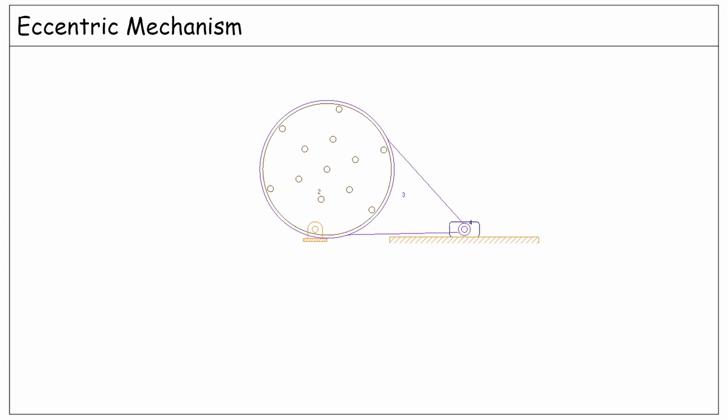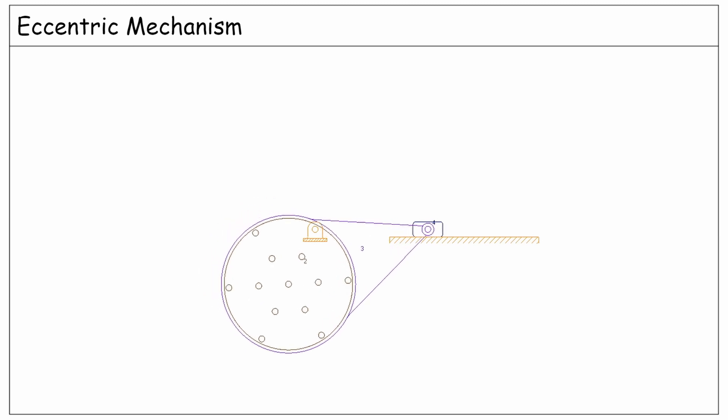The motion of this mechanism is equivalent to a slider crank linkage, having a crank length equal to O2C, and a coupler of length CD.